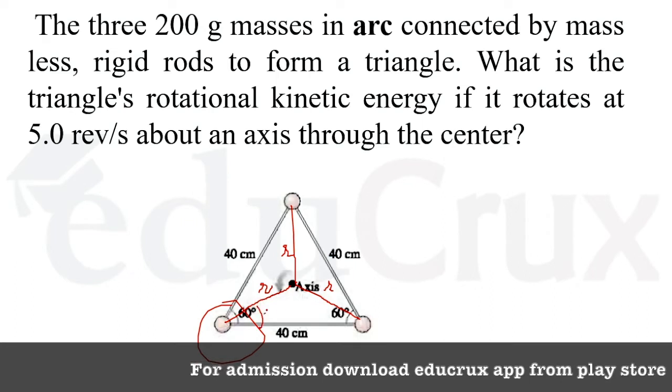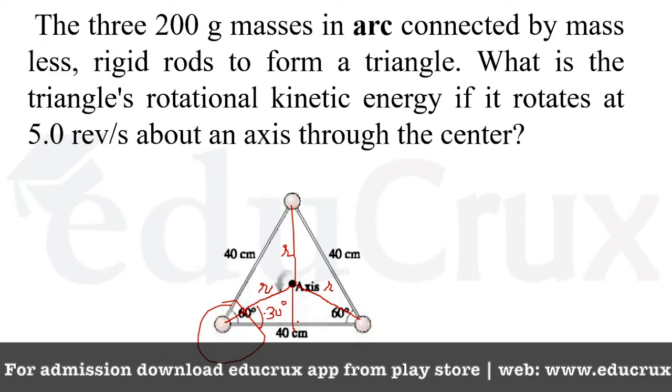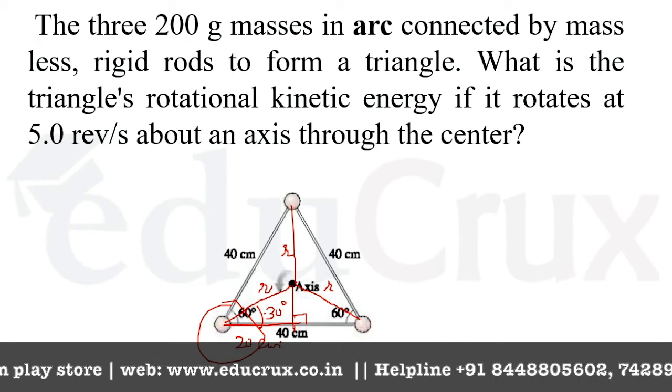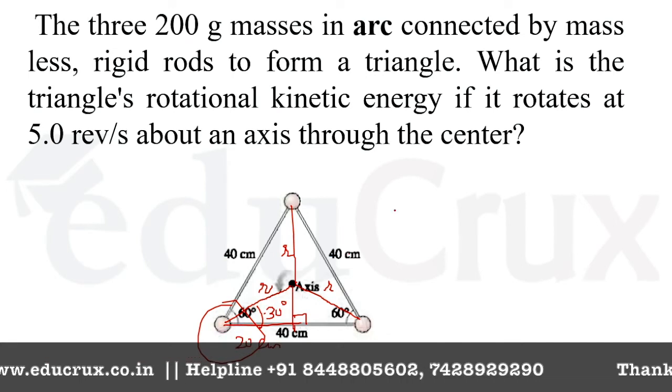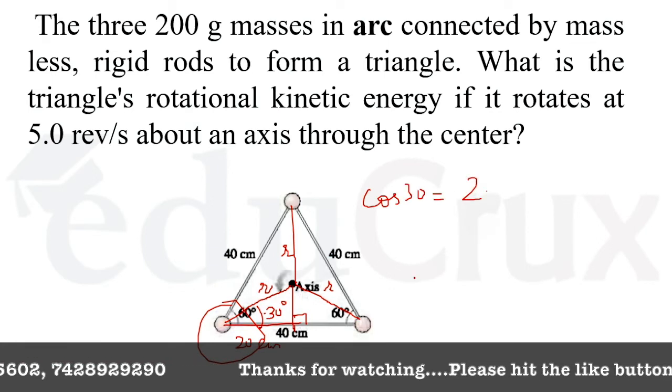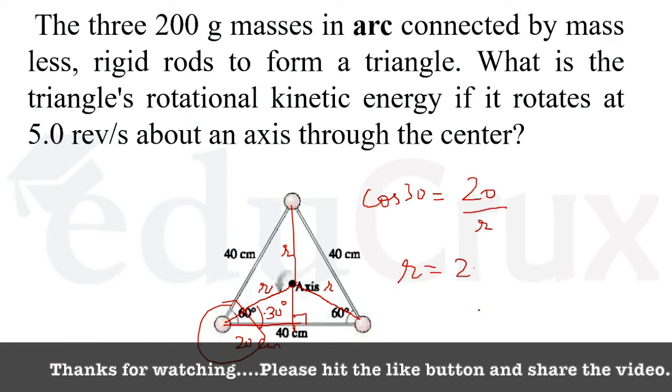Now, this is 60 degrees, so for an equilateral triangle we'll draw a perpendicular. This will be half, so this will be 20 centimeters. From this triangle you can see that cos 30 equals 20 divided by r, so r is 20 divided by cos 30.